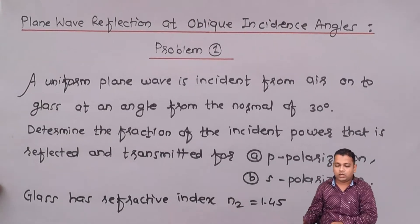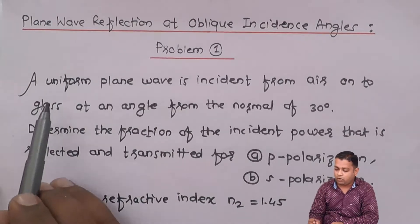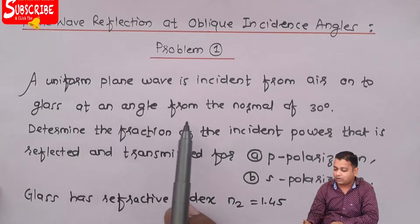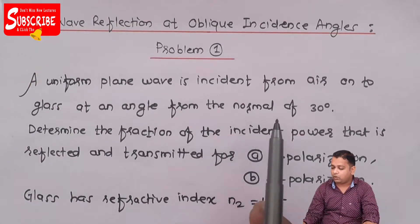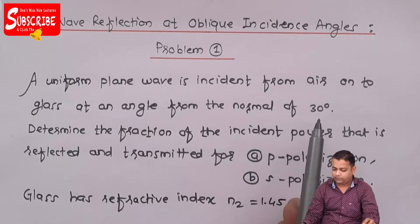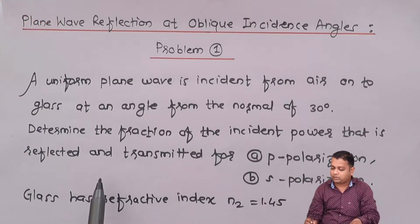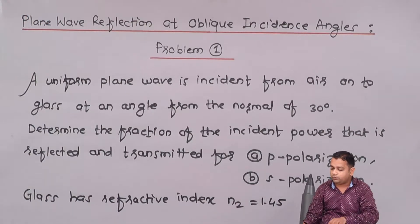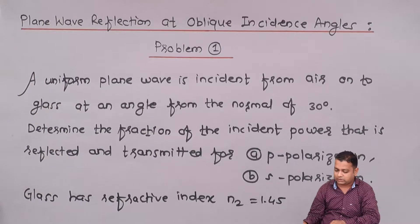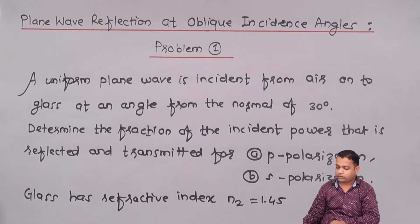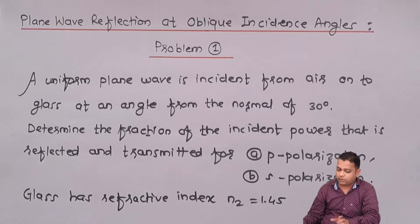Here we have the problem: a uniform plane wave is incident from air onto glass at an angle from the normal of 30 degrees. Determine the fraction of the incident power that is reflected and transmitted for P polarization and S polarization. Glass has the refractive index N2 equal to 1.45.